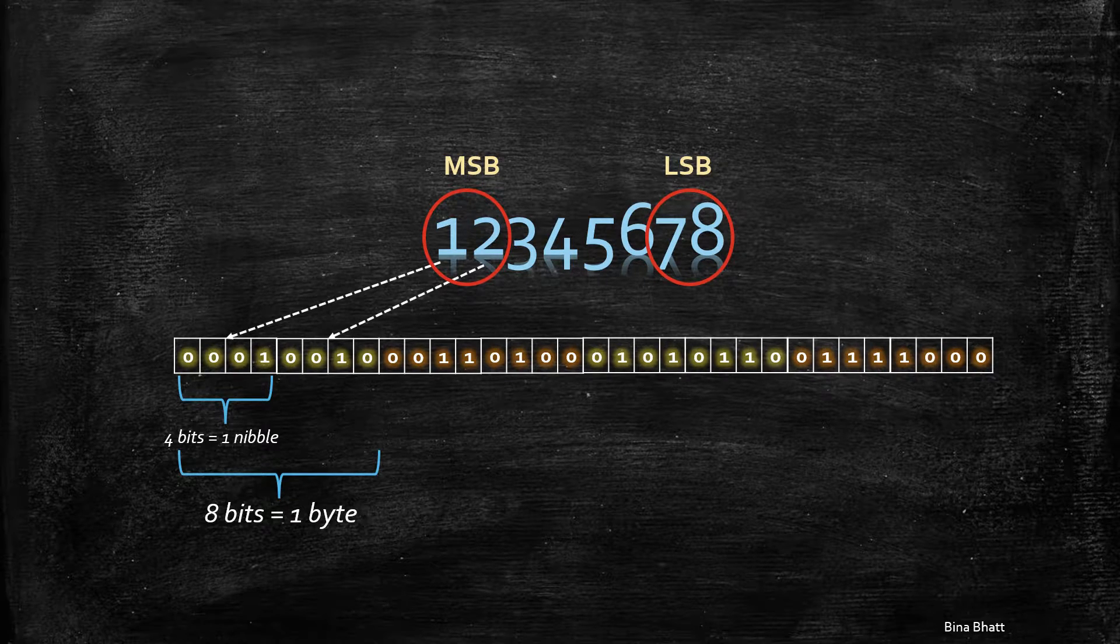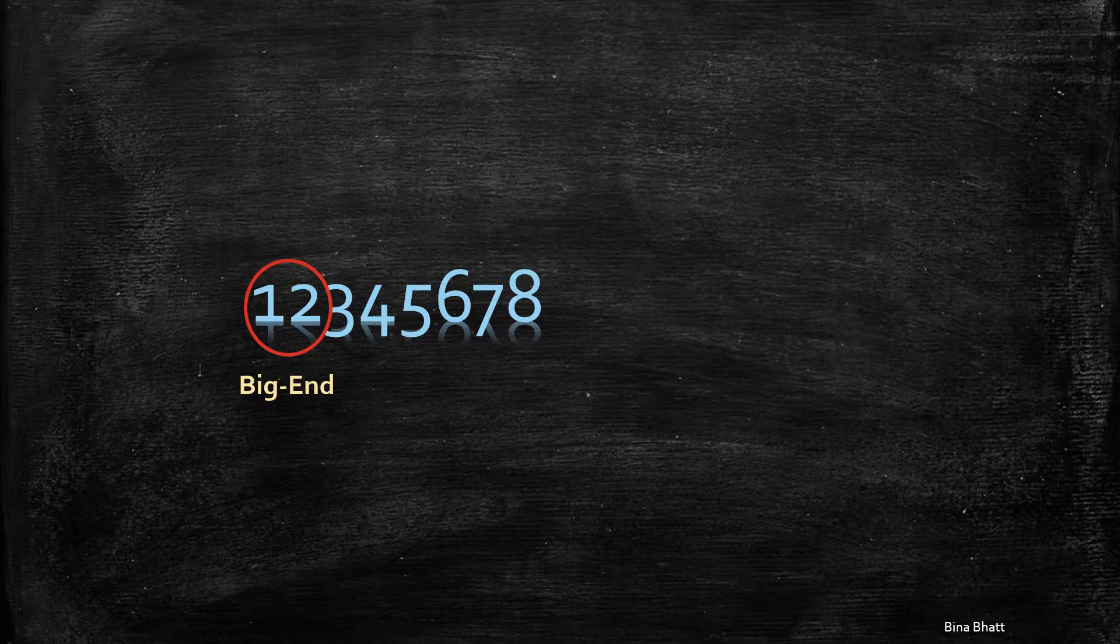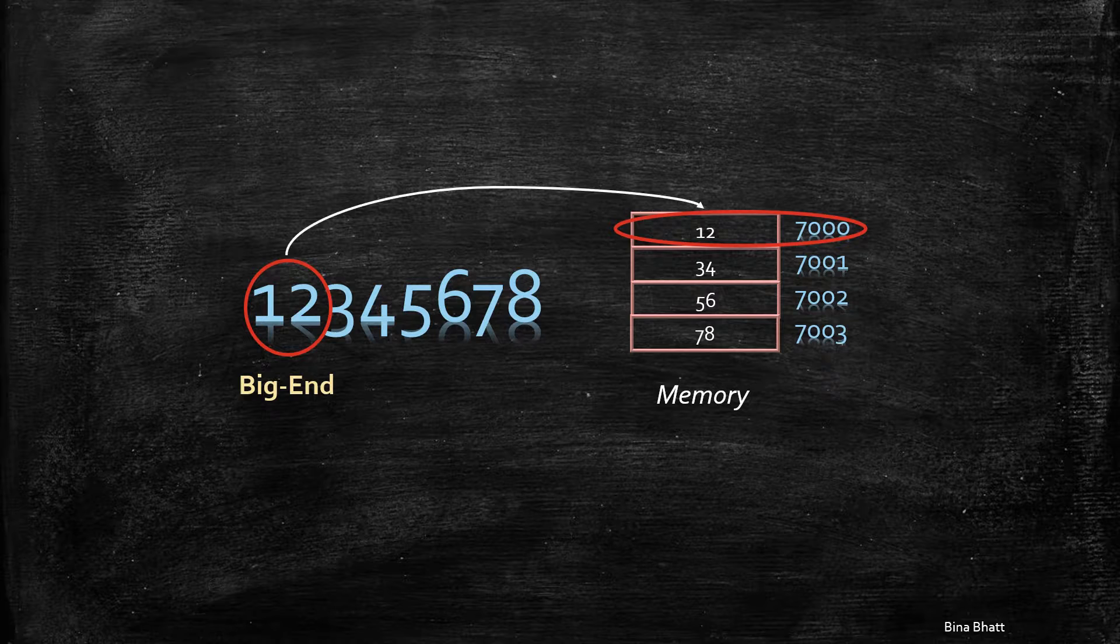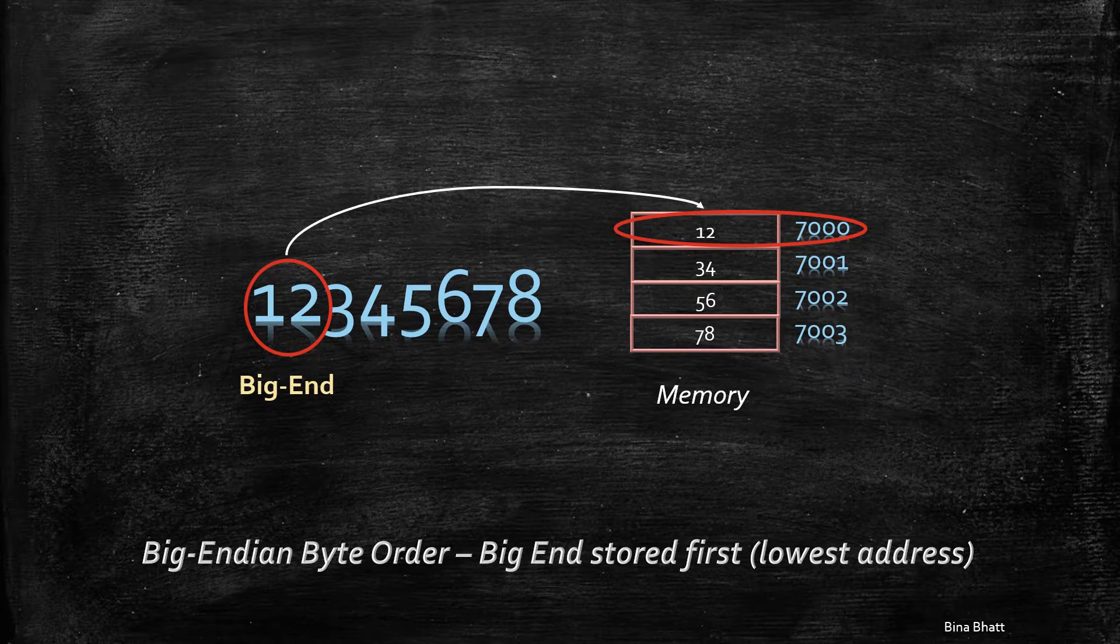Now, if we store, that is the processor stores, the MSB or the big end of the data in the first or the lowest address of the memory, then such a byte order is known as big endian.